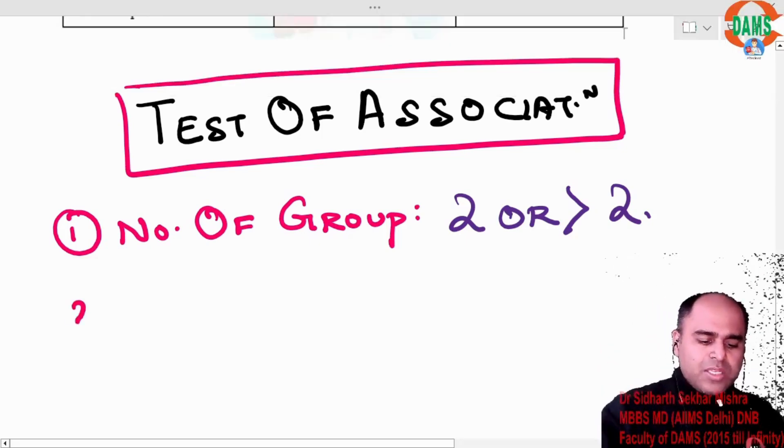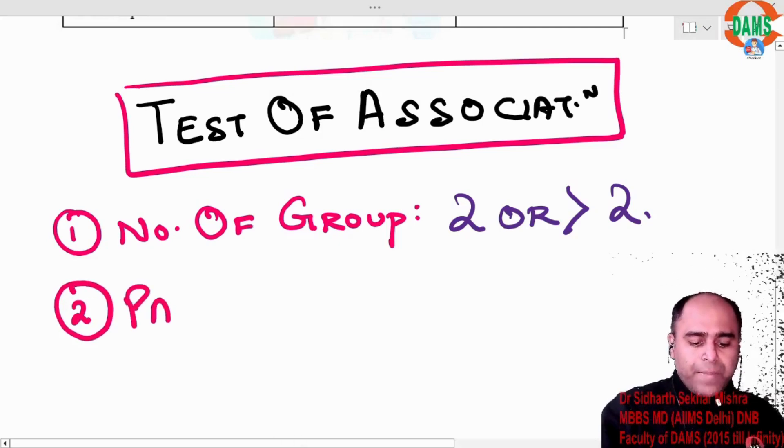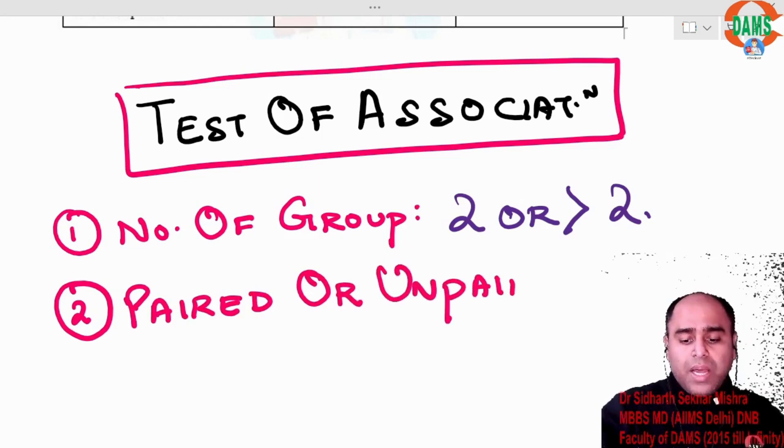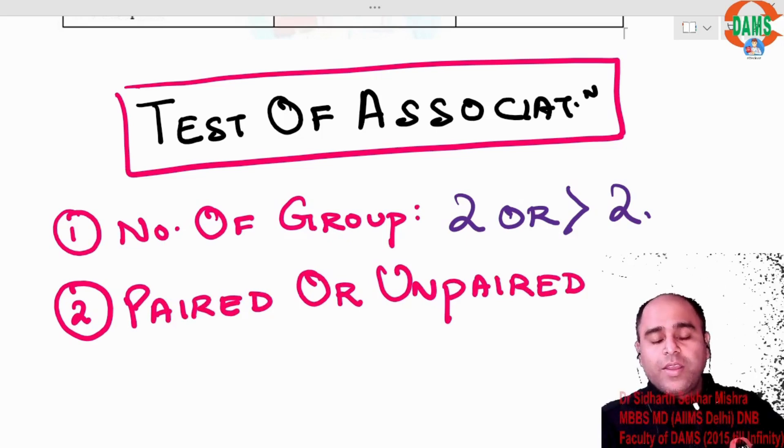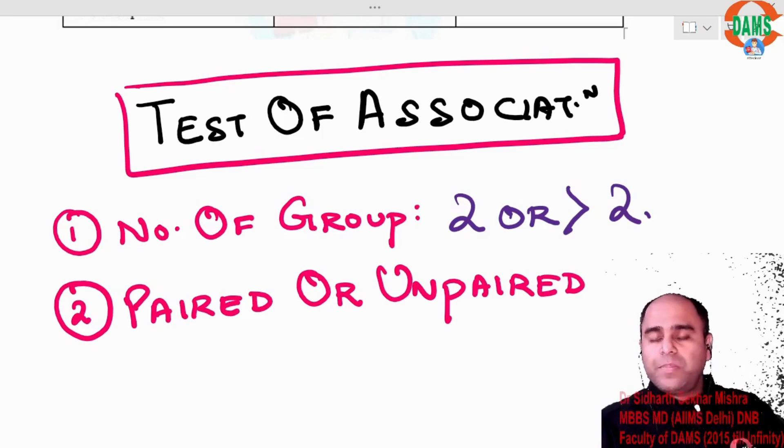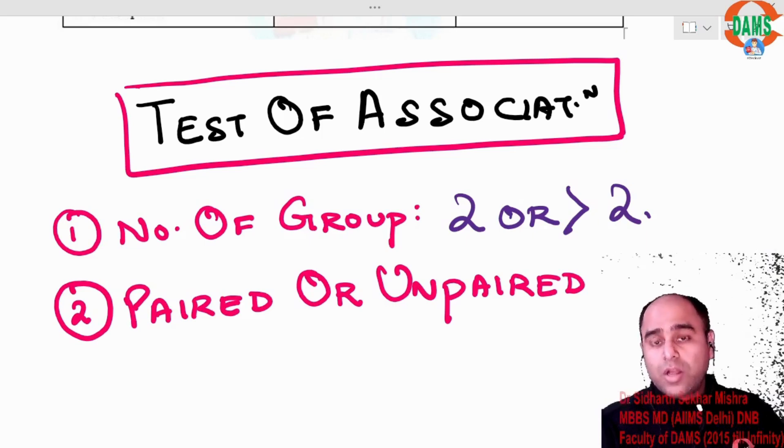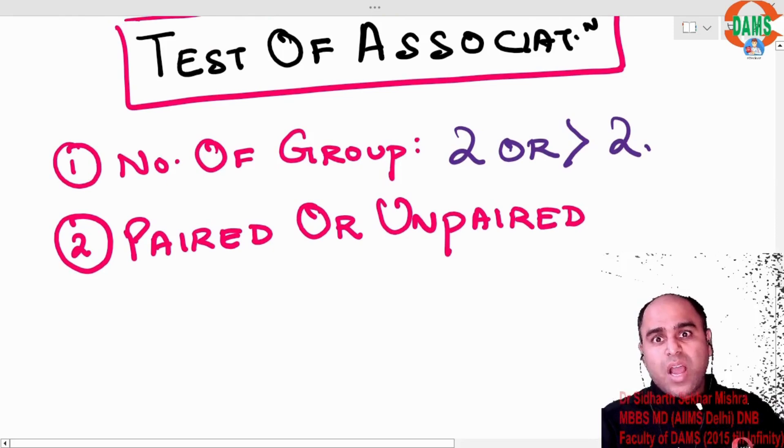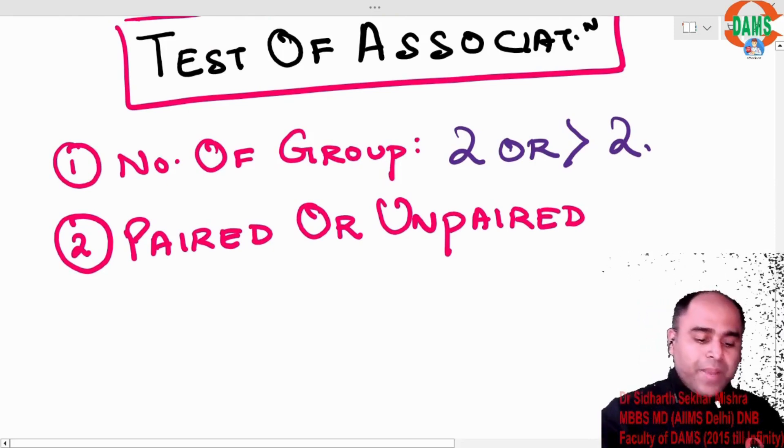The second step is you have to see whether it is paired or unpaired. What is the meaning of paired? Salman Khan's acting in Dabangg 1 versus Dabangg 2, paired. Rohit Sharma's captaincy in IPL versus ICC tournament, paired. What is unpaired? Salman Khan's acting in Dabangg versus Tiger Shroff's acting in Baaghi, or Rohit Sharma's captaincy of Mumbai Indians versus Hardik Pandya's captaincy. This is unpaired.